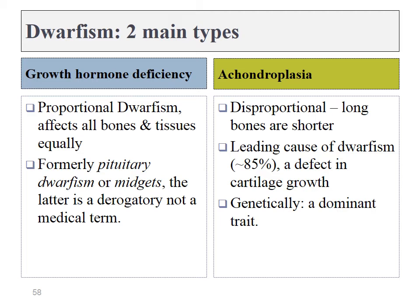On the other hand, an underproduction of growth hormone can lead to proportional dwarfism — it affects all bones and tissues equally. This is a rare form of dwarfism. Much more common is a condition called achondroplasia. Growth hormone is just fine in this condition, but the growth of cartilage is not, meaning the growth of long bones is diminished. Achondroplasia is not proportionate — it primarily affects the length of long bones. The skull and thoracic cage are of average size, but the arms and legs are below average in length.